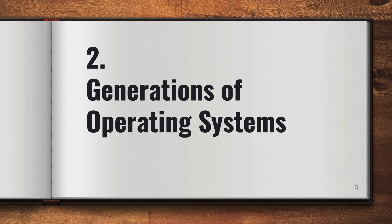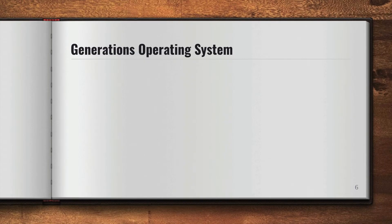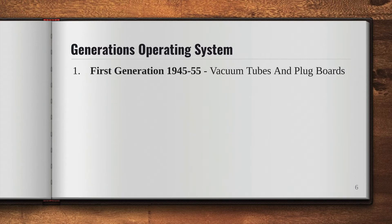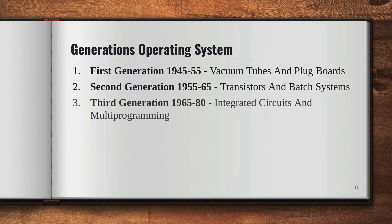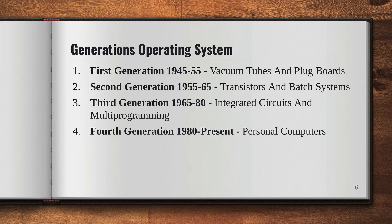Now we're going to talk about different generations of the operating system, about the history of operating systems. Operating systems can be divided into four generations. The first generation is from 1945 to 1955, the second from 1955 to 1965, the third from 1965 to 1980, and the fourth generation, which is the current one, from 1980 to present.